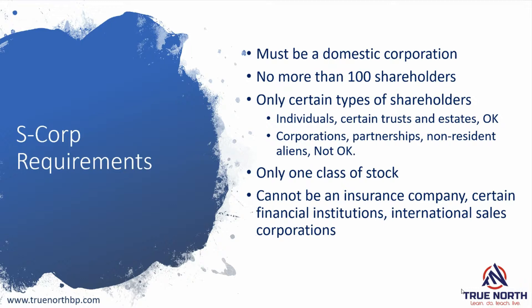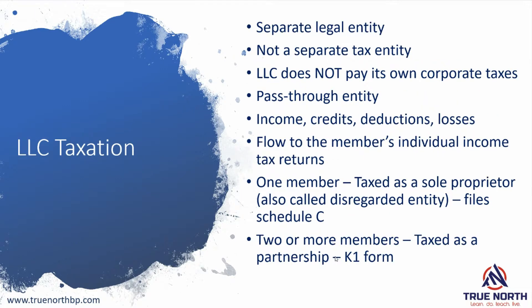The next requirement is that the S corp can only have one class of stock, whereas a C corp can have multiple classes of different types of stocks. Lastly, as an S corp you cannot operate as an insurance company, you cannot operate as certain types of financial institutions, and you cannot operate as an international sales corporation selling products to other nations outside of the US.